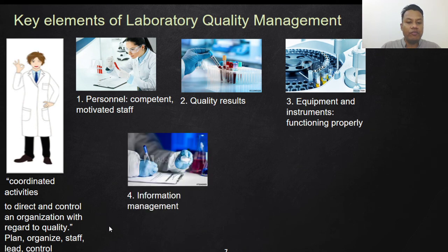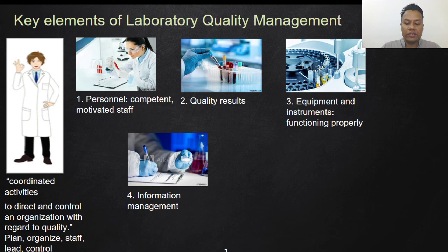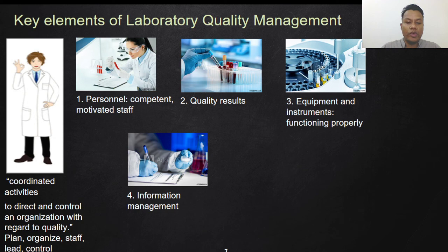The fourth key element is information management. The activities that need to be controlled include how the result is produced, how it is written, whether it has been double-checked by supervisors, how precise the results are, maintaining confidentiality of patient information, and keeping meticulous records so it will be easy to trace results in the future.